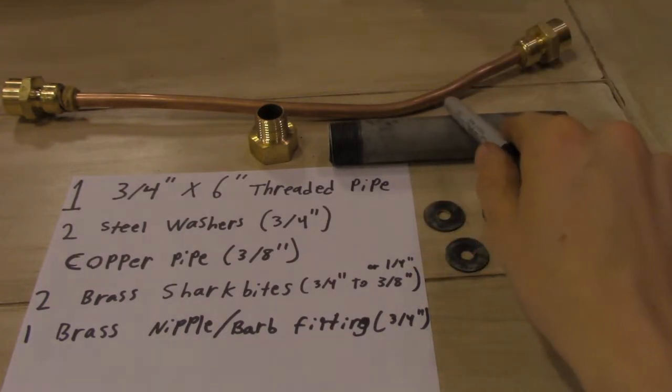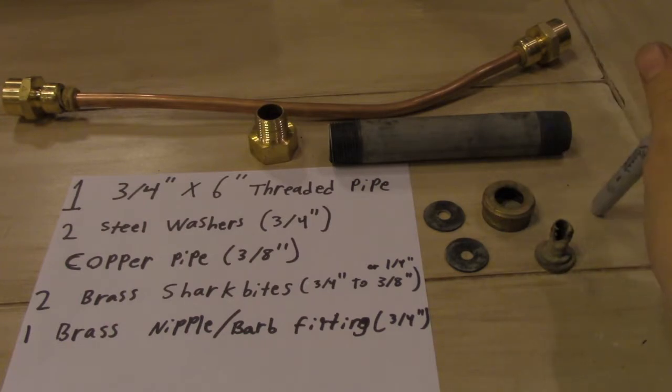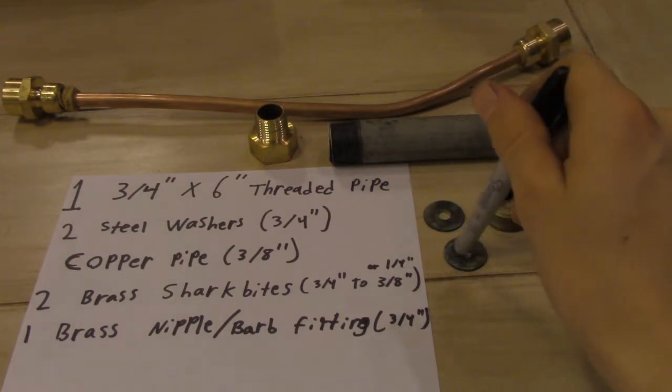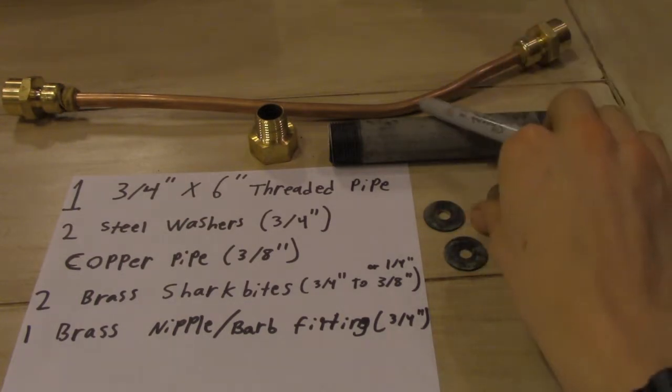One three-quarter inch by six inch threaded pipe, threaded on both ends and not on the inside. Steel works, not aluminum. You need two steel washers, of course they need to fit into this here.